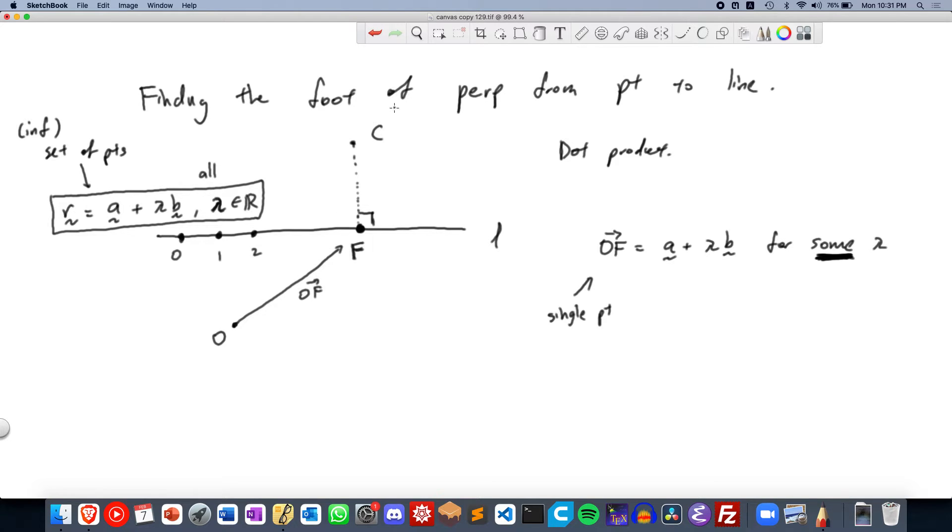So yeah, so we don't really know what the value of lambda is, right? That's why we represent it with an unknown variable lambda, which we will solve for later. So OF is this.